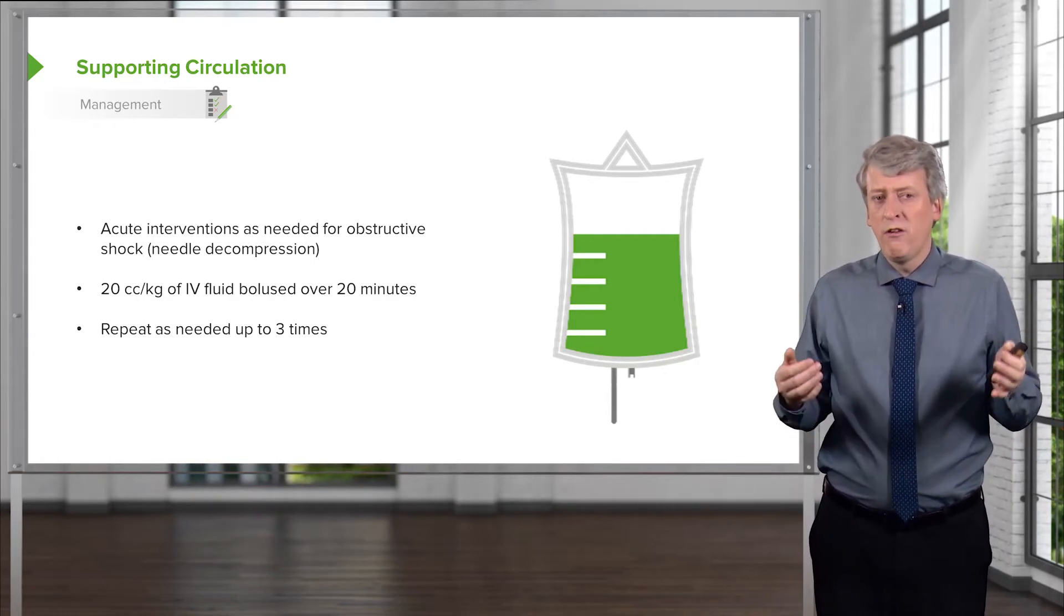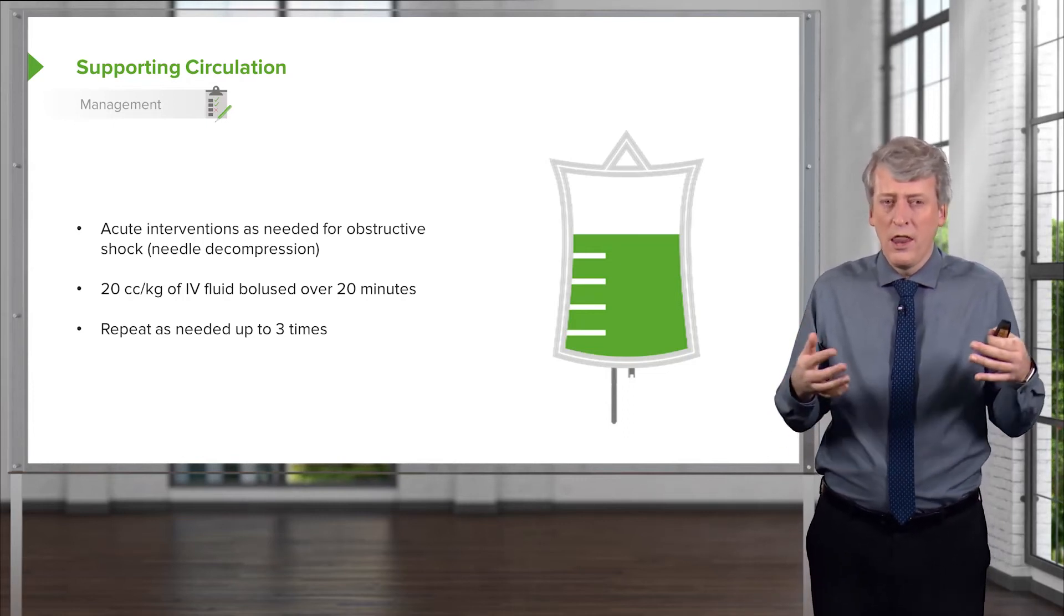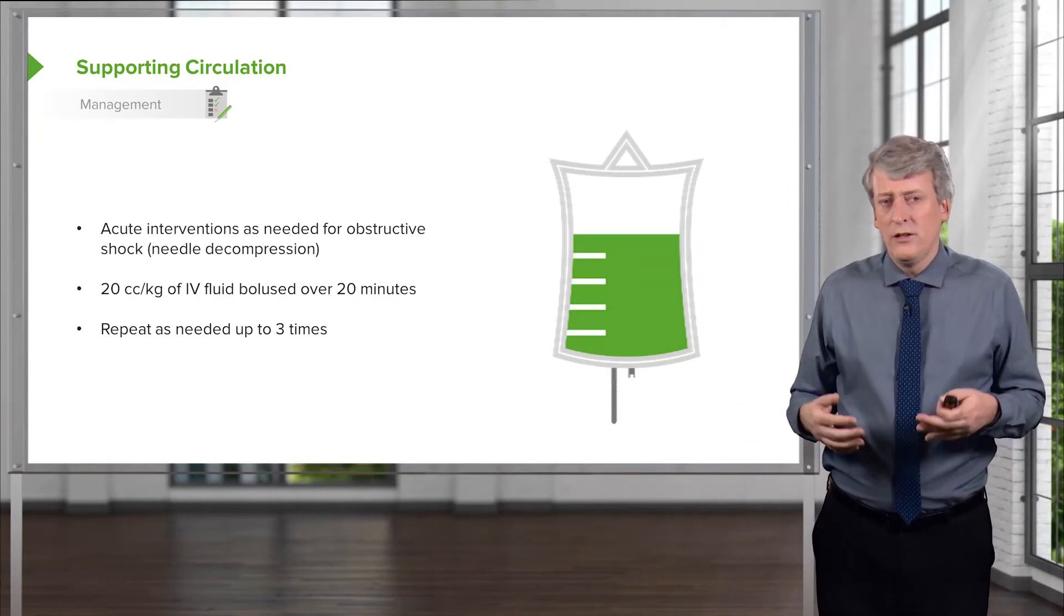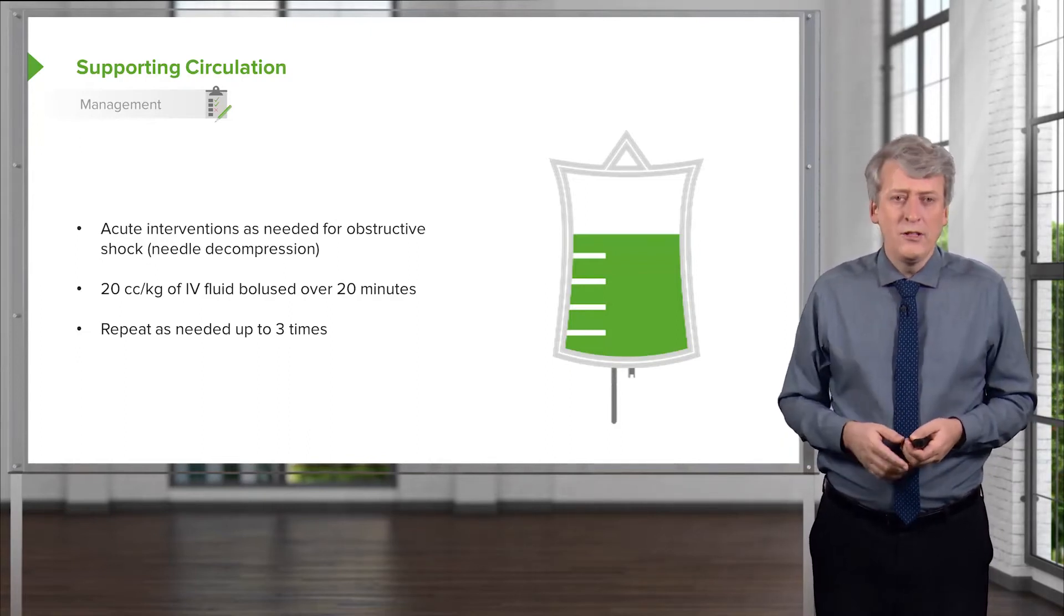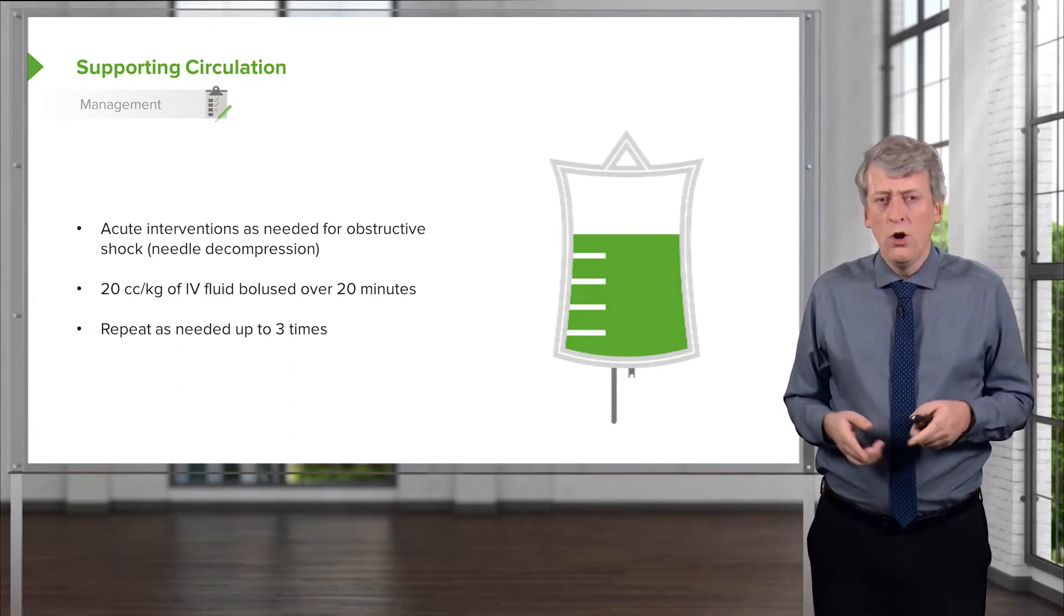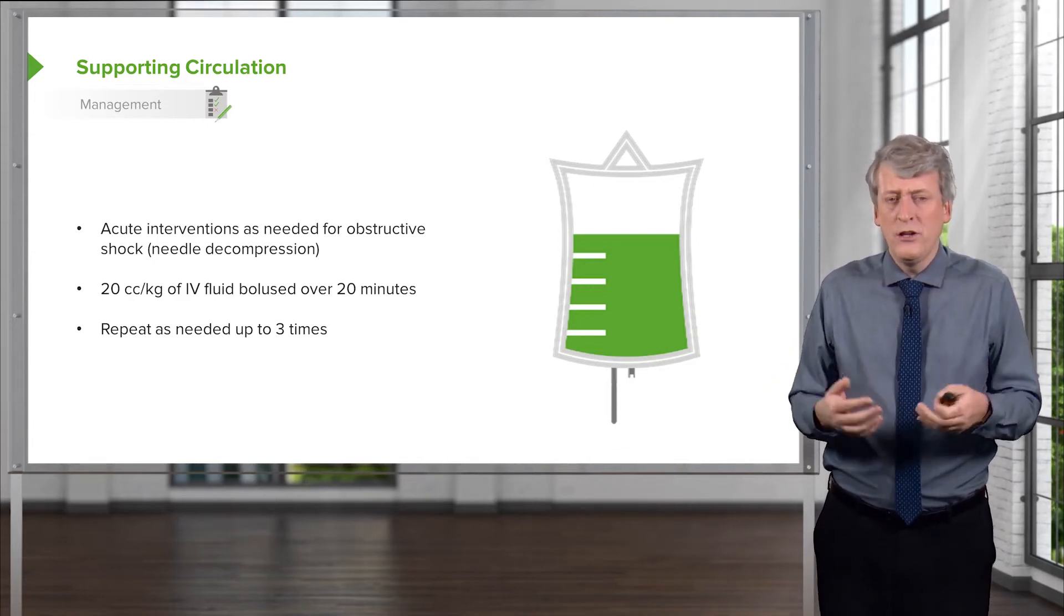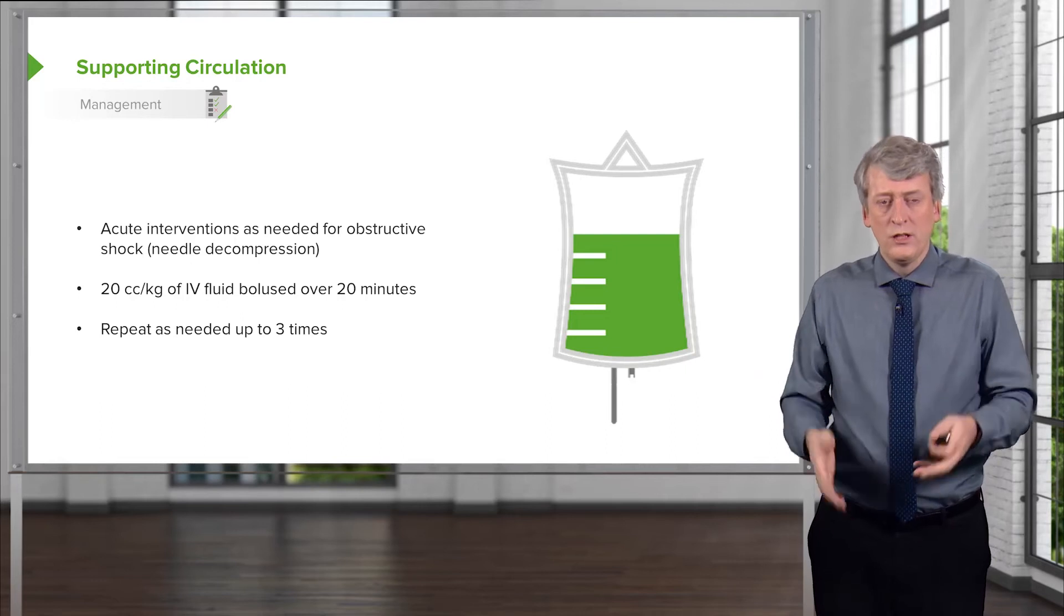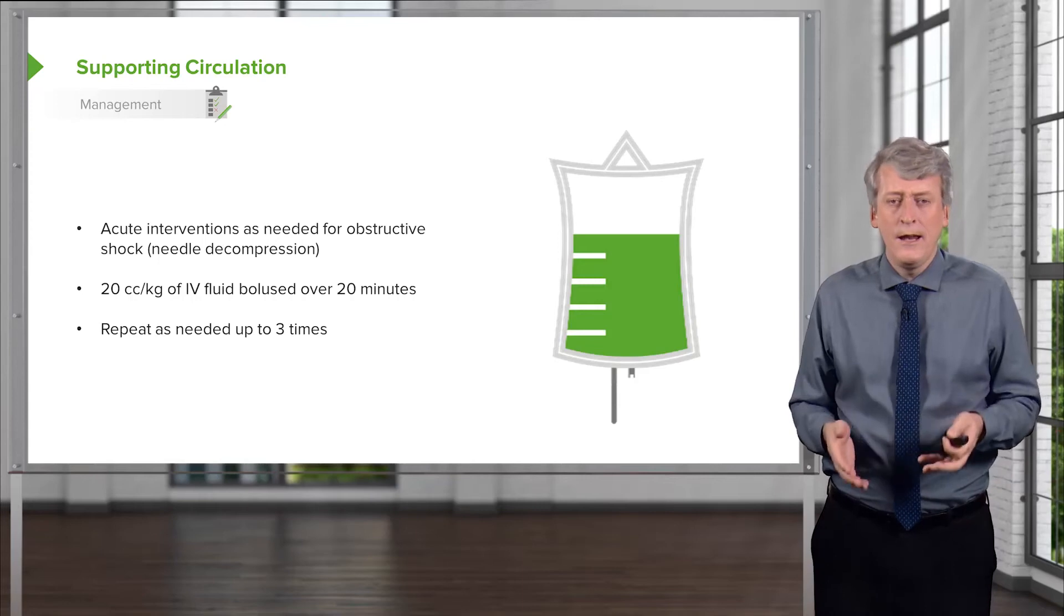By the time you're giving a fourth bolus, you're probably making a mistake. These patients now probably aren't that dehydrated or hypovolemic unless there's ongoing losses. The reason being is you can actually fluid overload someone who is in shock. And if you fluid overload them, the lungs become filled with fluid and it can be harder to engage in resuscitation. So after three boluses, you should start to think about alternative methods for maintaining blood pressure support.